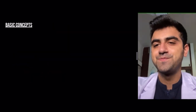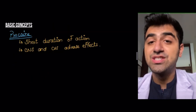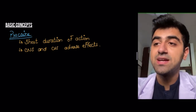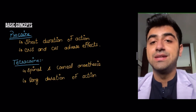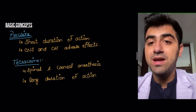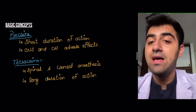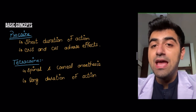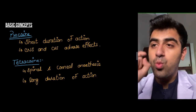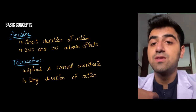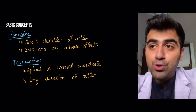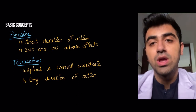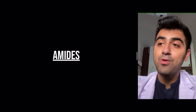Procaine has a short duration of action and has CNS and CVS adverse effects. Tetracaine is used for spinal and corneal anesthesia and has a long duration of action. A mnemonic to remember: 'pro' is one, 'tetra' means four — so tetracaine has a longer duration of action than procaine.